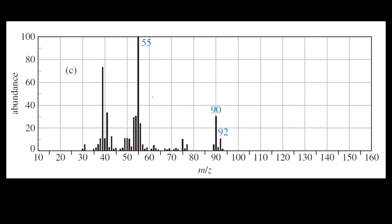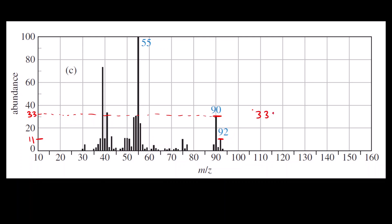In the third graph, the M+ peak is approximately at 33 and the M+2 peak is approximately at 11. The ratio 33 to 11 is 3 to 1, which is the intensity ratio seen for chlorine. So the heteroatom for this third graph is chlorine.